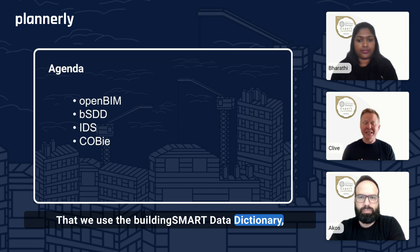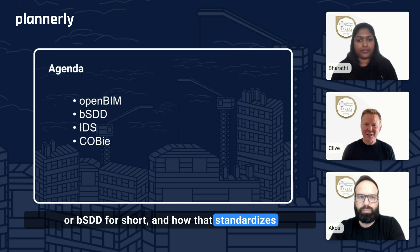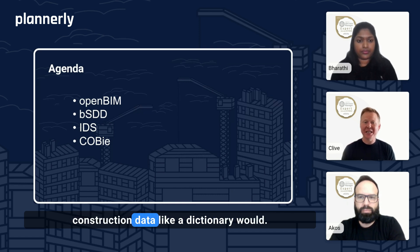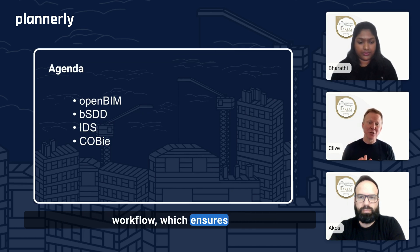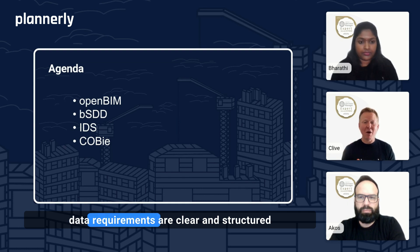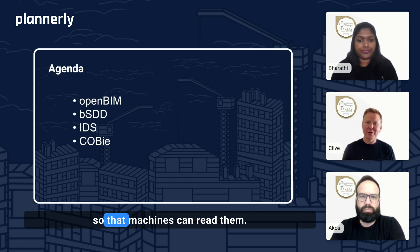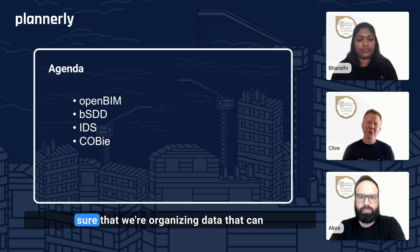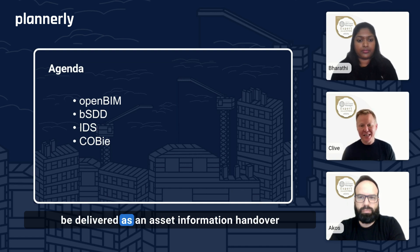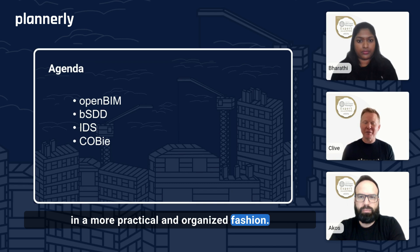We'll also cover the Building Smart Data Dictionary, or BSDD for short, and how that standardizes construction data like a dictionary would. And the IDS process — the information delivery workflow — which ensures data requirements are clear and structured so that machines can read them. And finally, the COBE workflow to make sure that we're organizing data that can be delivered as an asset information handover in a more practical and organized fashion.